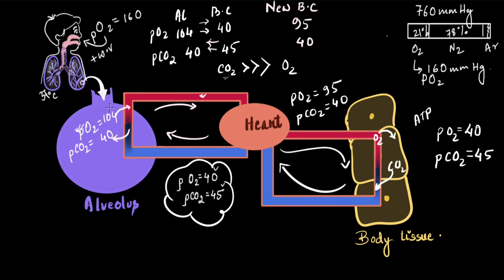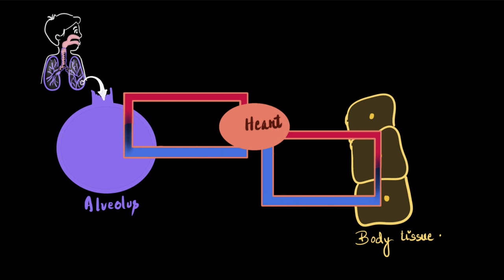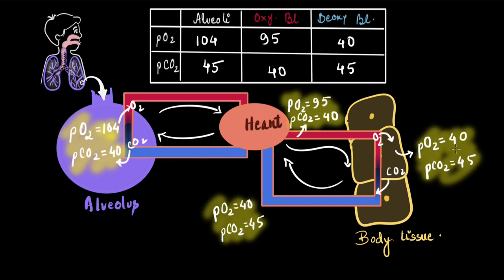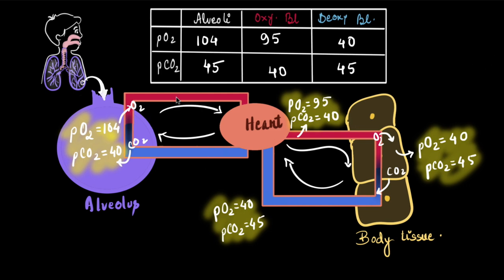This deoxygenated blood returns to the alveoli through the heart, gets oxygenated again, and the cycle continues. A neat diagram summarizing all the partial pressure values at each step has been provided — you can pause the video here and trace how the partial pressure gradient drives gases in and out of the blood at each stage.